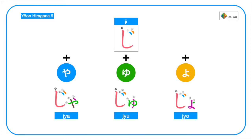So shi with double dot pronounces ji plus ya, yu, yo. We have ja, ju, jo. Ja, ju, jo.